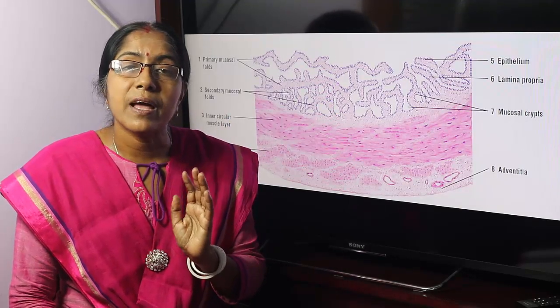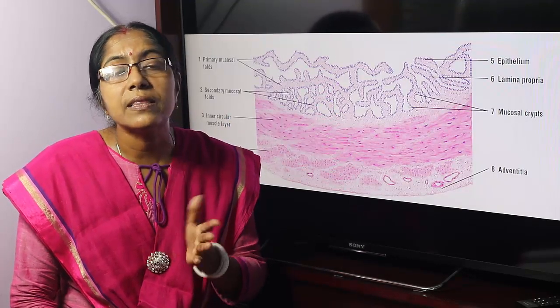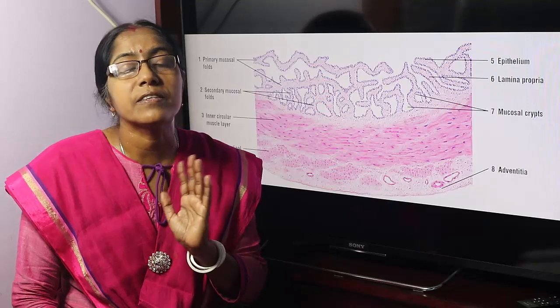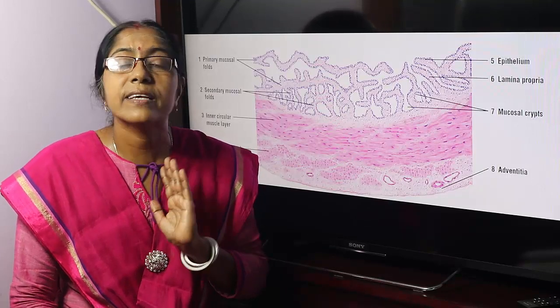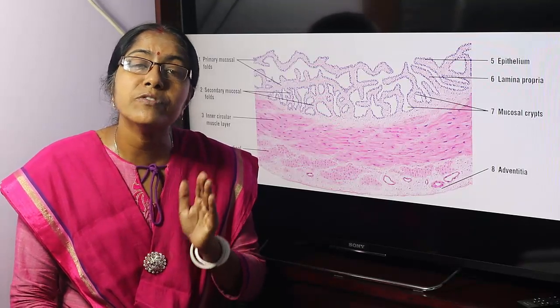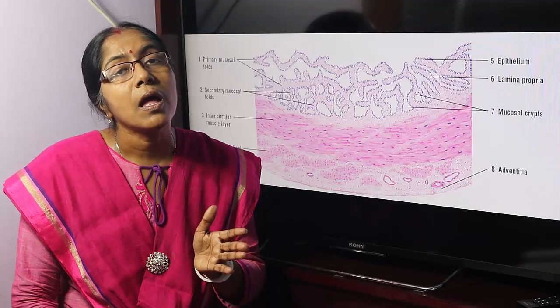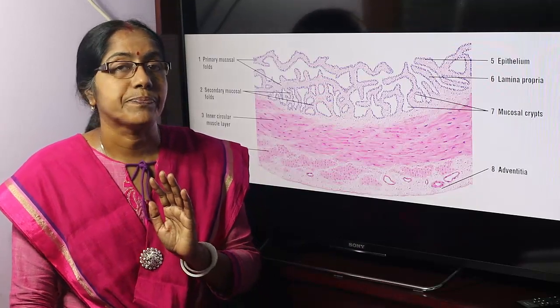The duct of the seminal vesicle unites with the ductus deferens and forms the ejaculatory duct, which opens into the prostatic urethra.